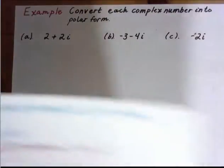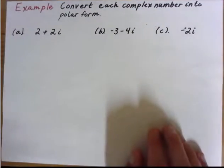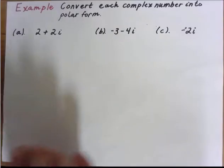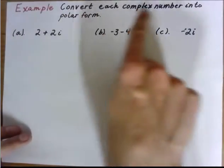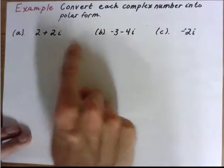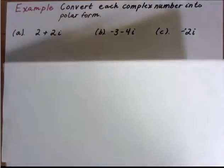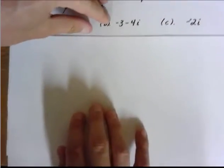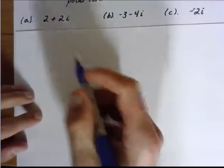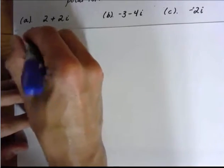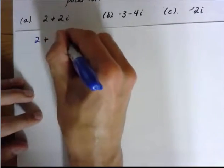So we're going to present three examples, not all in the same video because that will run a little bit long. But we're going to go ahead and convert each of these numbers into polar form. So we're going to start with 2 plus 2i. So I'm going to go ahead and rewrite this. So we're going to have 2 plus 2i.